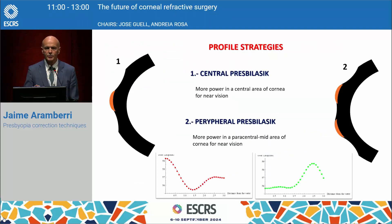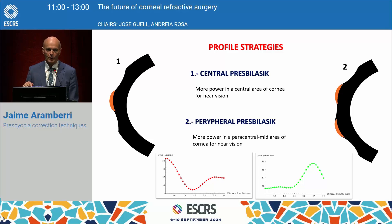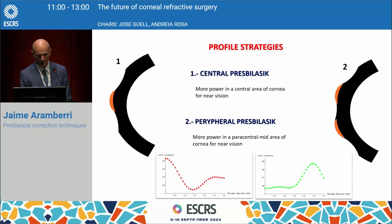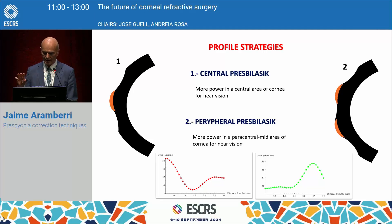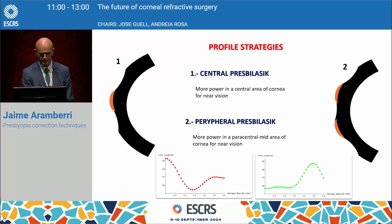There are two main strategies. One is what's called central presbyLASIK, where we add more power to the central cornea — that will be the area used for near vision. The counterpart is the peripheral presbyLASIK, where we do the opposite: we give more power in an annular area in the mid-periphery, so that will be the part for near vision.